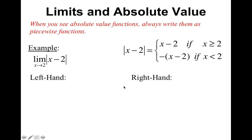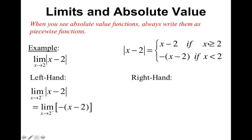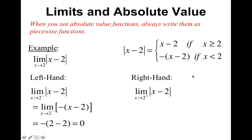So what piece am I going to use for the left side? x values less than two. So for the left-handed side, I'm going to use that piece of the function to evaluate the limit. I can go ahead and distribute the negative or plug in two — however you want to do it — and you get zero. Now let's do the right-handed limit. I'm going to replace the absolute value with x minus two, plug in two, and I get zero. Since the left and the right are the same value, this limit exists and it equals zero.